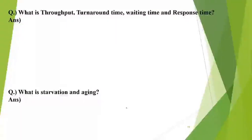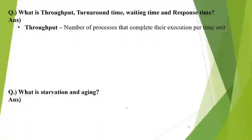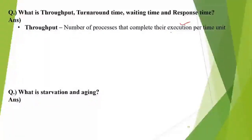While scheduling, there are various terms we need to know. Throughput is basically the number of processes that complete their execution per unit time. Suppose there are many processes coming into the system — in 10 minutes, how many processes are being completed? That is throughput. For example, throughput can be 100 processes per unit of time.